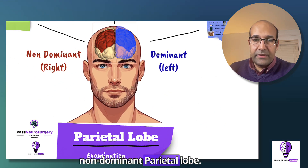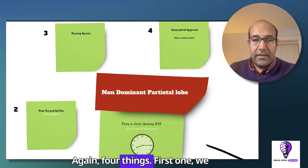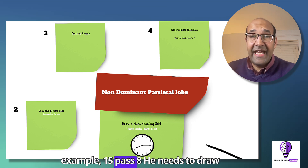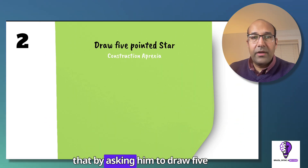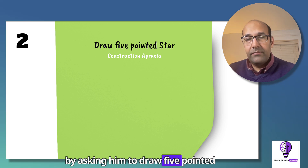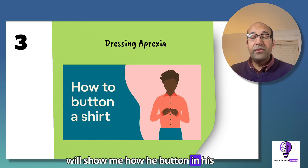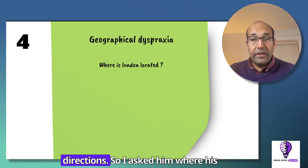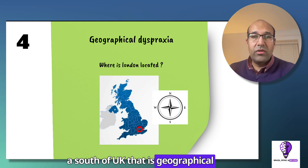Moving now to the non-dominant parietal lobe — what do we need to know? Again, four things. First, spatial awareness: the ability to draw a clock showing, for example, 15 past 8. Next, construction apraxia: tested by asking him to draw a five-pointed star. Third, dressing apraxia: asking him to show how he puts on his shirt. Fourth, geographical dyspraxia: whether he can identify locations and directions — for example, 'Where is London located?' and he answers, 'South of the UK.'